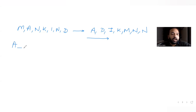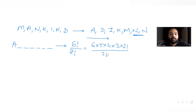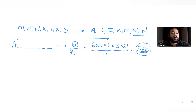Words starting with A come first. After placing A in the first position, the remaining six spaces can be filled with the other six letters. Since two N's are still available among the remaining letters, the count is 6!/2! = 360 words starting with A.